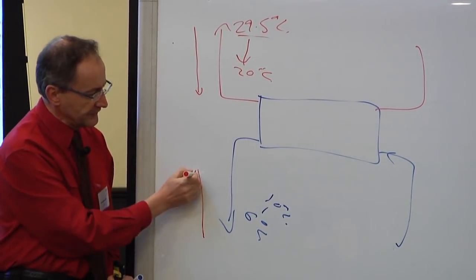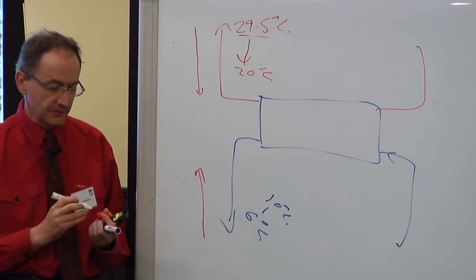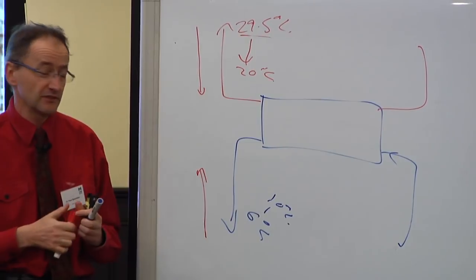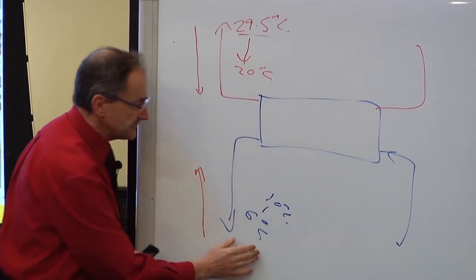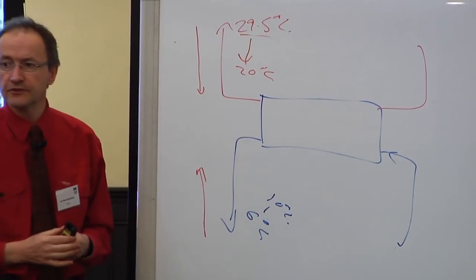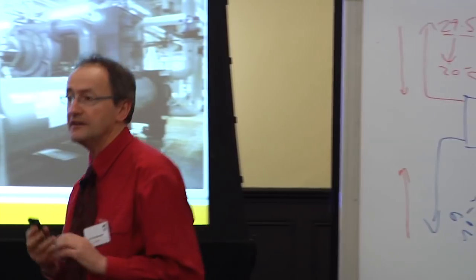For every 1 degree C you increase this temperature, you get anywhere between 2 and 5%, and some chillers more than 5% improvement in efficiency. So just by varying those numbers, you can get a significant improvement in chiller efficiency without any hardware at all.